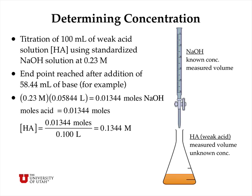We can calculate the concentration of the original acid by first computing the number of moles of sodium hydroxide used to reach the endpoint: 0.23 moles per liter times 0.05844 liters equals 0.01344 moles of sodium hydroxide. At the endpoint, the number of moles of acid and base are the same, so we use that information along with the original volume of the acid to calculate the originally unknown concentration of acid as 0.1344 moles per liter.